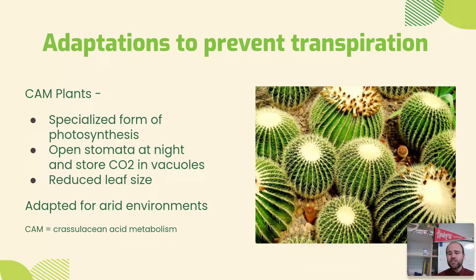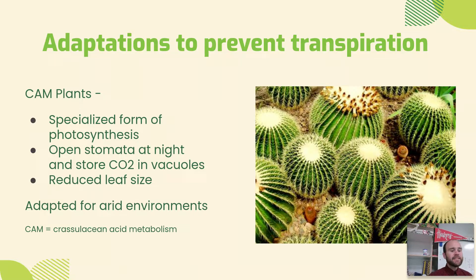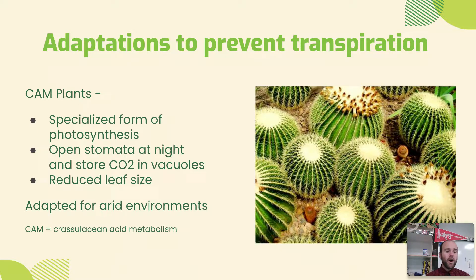That's one adaptation to slow down transpiration, but certain plants have evolved totally different strategies. In addition to their guard cells, there are certain plants called CAM — which stands for crassulacean acid metabolism — a special type of photosynthesis where the stomata will only open up at night. They store carbon dioxide in special structures called vacuoles, and they have a really small leaf size to limit the number of stomata, so they have fewer holes open to lose water, with guard cells closed during the day.